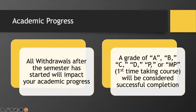Now let's talk about academic progress. All withdrawals after the semester has started will impact your academic progress as these will be noted as attempted credits. A grade of A, B, C, D, P, or MP the first time taking zero level courses will be considered successful completion.